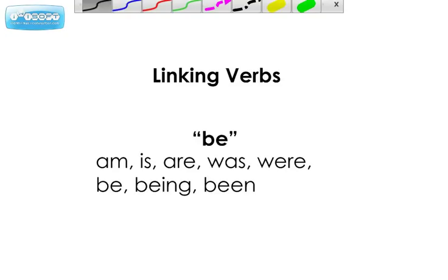The first thing I'm going to talk about are the linking verbs themselves — specifically the be verbs, the forms of be: am, is, are, was, were, be, being, and been. You really want to spend a little time and energy focusing on these because they're probably the most commonly used ones, yet they're the ones that students tend to have the most trouble finding in a sentence.